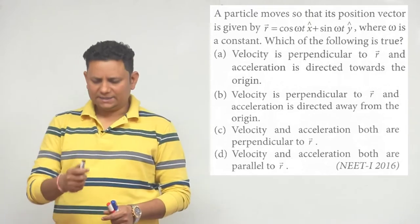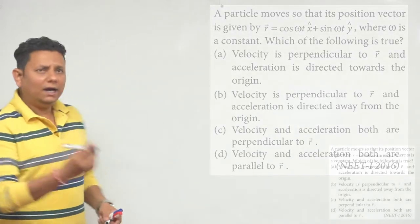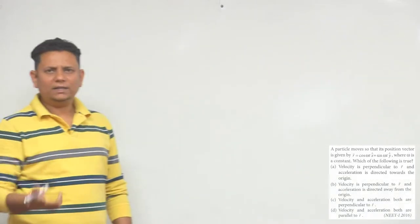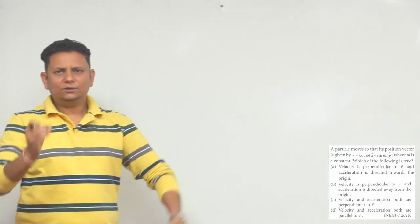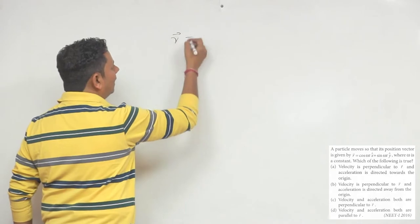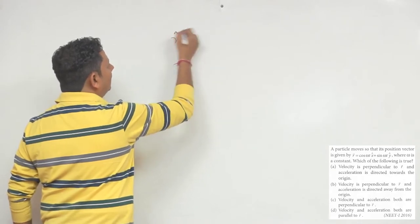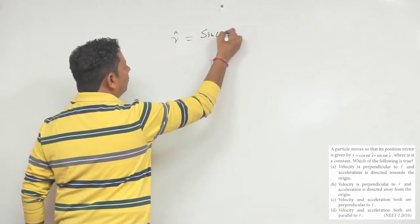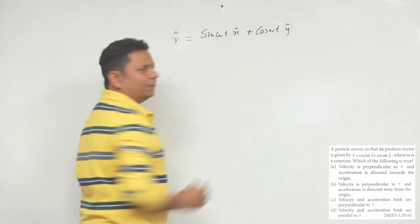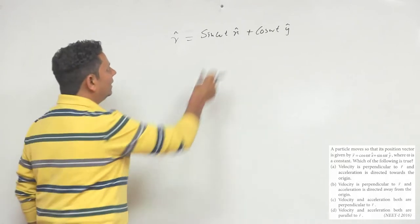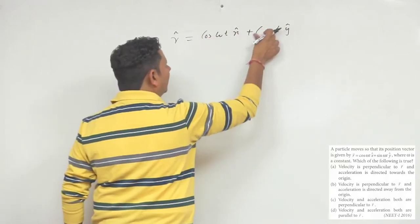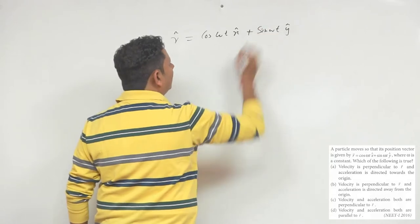This question was asked in the exam in 2016. There can be two methods to solve this. Method number one: we write r vector as cos(ωt) x̂ + sin(ωt) ŷ.